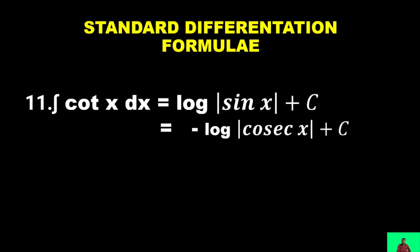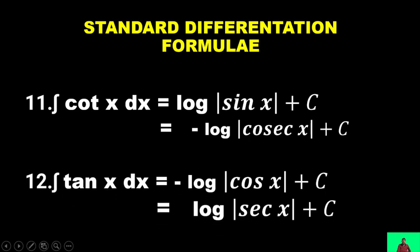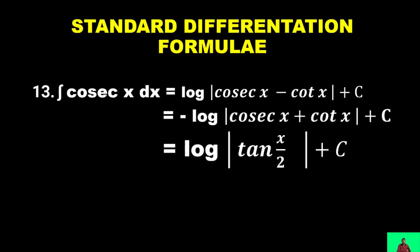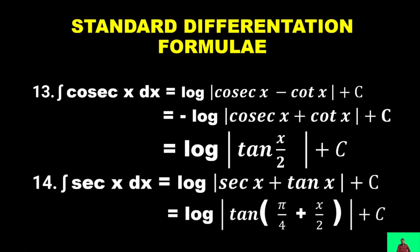∫cot x dx = log|sin x| + C, or equivalently −log|cosec x| + C. ∫tan x dx = −log|cos x| + C, or log|sec x| + C. ∫cosec x dx = log|cosec x − cot x| + C = −log|cosec x + cot x| + C = log|tan(x/2)| + C. ∫sec x dx = log|sec x + tan x| + C = log|tan(π/4 + x/2)| + C.